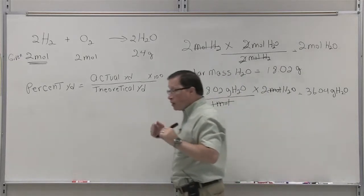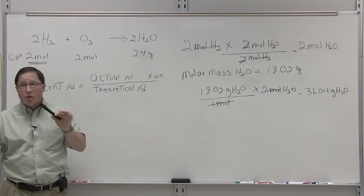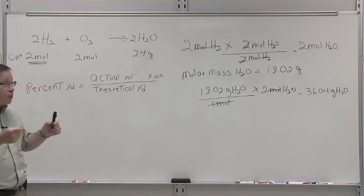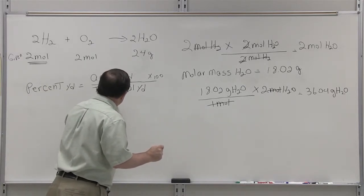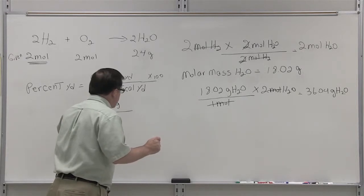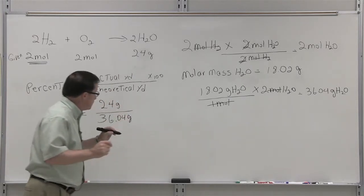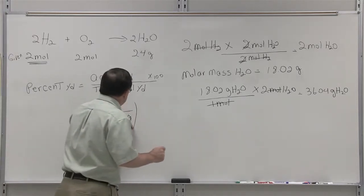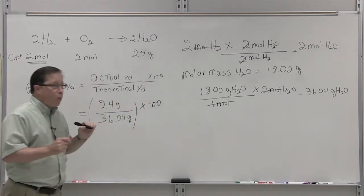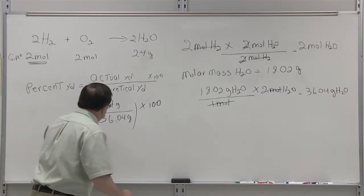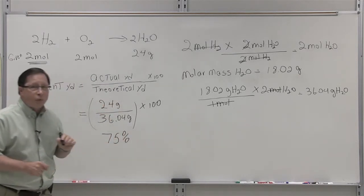Once we have grams here, it's an easier comparison between grams and grams. So in order to get our percent yield, we're going to divide 24 grams by 36.04 grams, multiply that times 100, and what we're going to find out is that our percent yield was close to 75%.